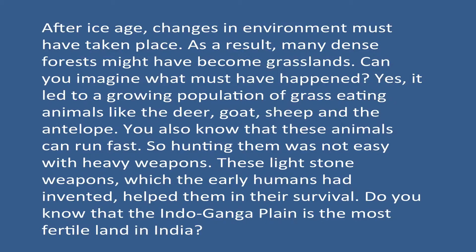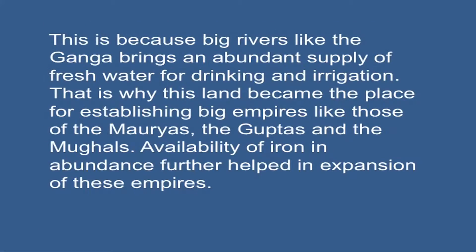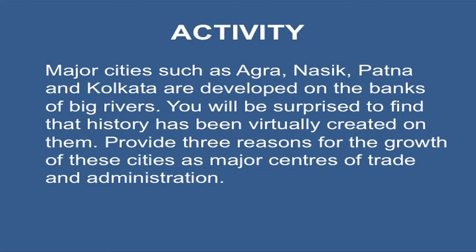The Indo-Gangetic Plain is the most fertile land in India because big rivers like the Ganga bring an abundant supply of fresh water for drinking and irrigation. That is why this land became the place for establishing big empires like those of the Mauryas, the Guptas and the Mughals. The availability of iron in abundance also helped in the expansion of these empires. Major cities such as Agra, Nasik, Patna and Kolkata are developed on the banks of big rivers — can you provide three reasons for the growth of these cities as major centers of trade and administration?